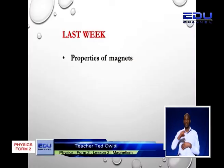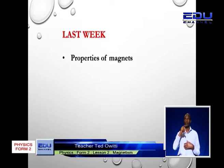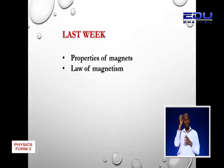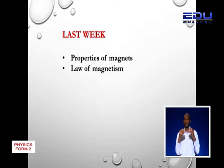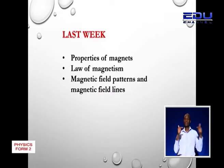Last week we talked about properties of magnets, and one of the properties we need to take into account this week is the directional property — the property in which a magnet, when suspended in the earth's magnetic field, will always point north. We also covered the law of magnetism: like poles repel and unlike poles attract. We also talked about the magnetic field, magnetic field patterns, and how to draw them.